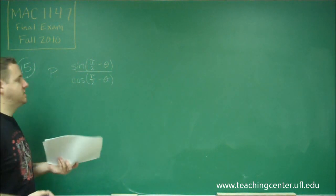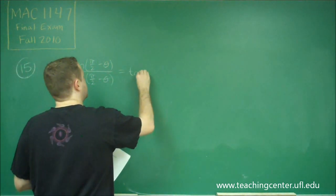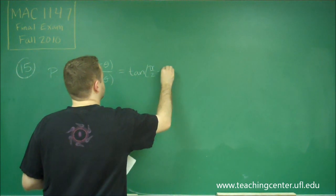Whenever you have sine over cosine of the same thing, that gives you tangent of that. So this is tangent of pi over 2 minus theta.